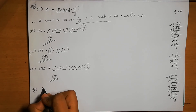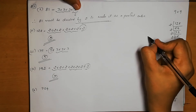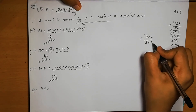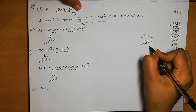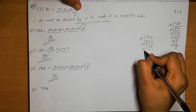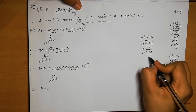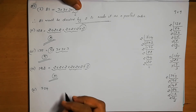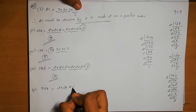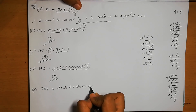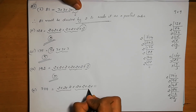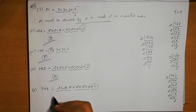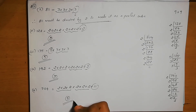Fifth number is 704. Its prime factors are 2 × 2 × 2 × 2 × 2 × 2 × 11. We have two triplets of 2s, but 11 is extra with no pair. Therefore, 704 must be divided by 11 to make it a perfect cube.